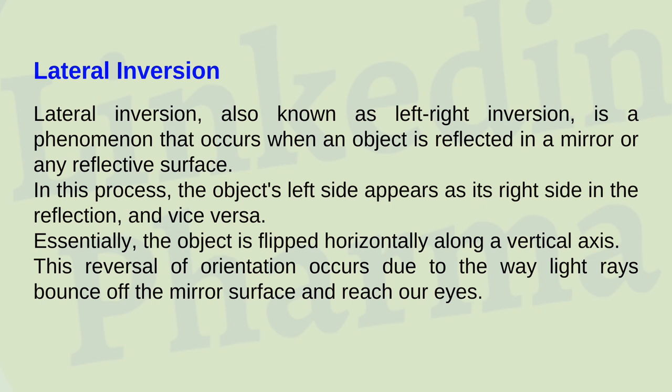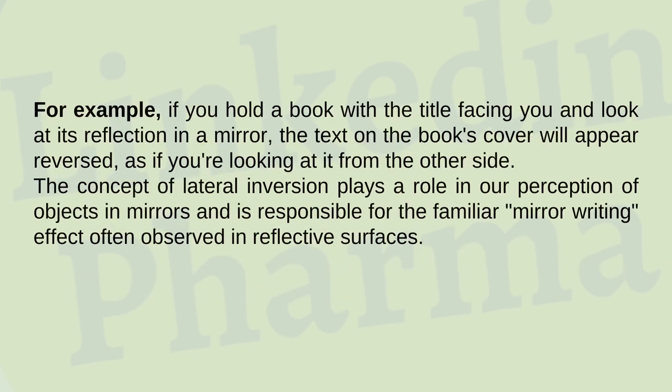Lateral Inversion: also known as left-right inversion, is a phenomenon that occurs when an object is reflected in a mirror or any reflective surface. The object's left side appears as its right side in the reflection, and vice versa — the object is flipped horizontally along a vertical axis. This reversal occurs due to the way light rays bounce off the mirror surface and reach our eyes. For example, if you hold a book with the title facing you and look at its reflection in a mirror, the text will appear reversed, as if you are looking at it from the other side. This is responsible for the familiar mirror-writing effect.